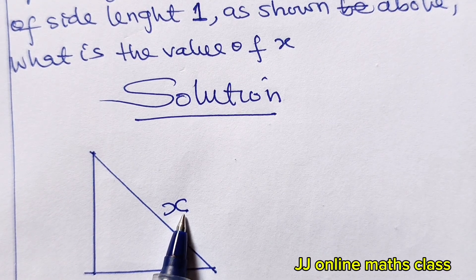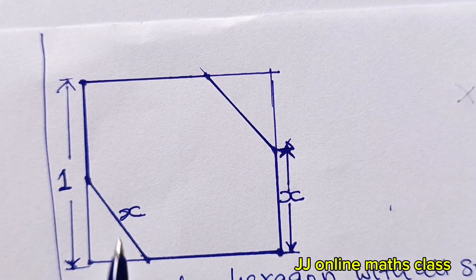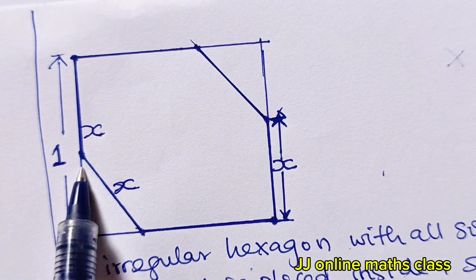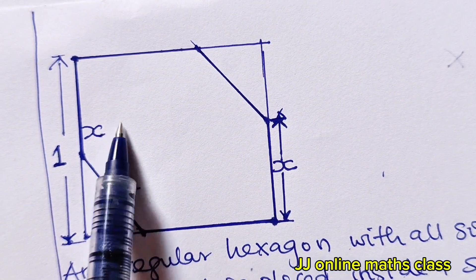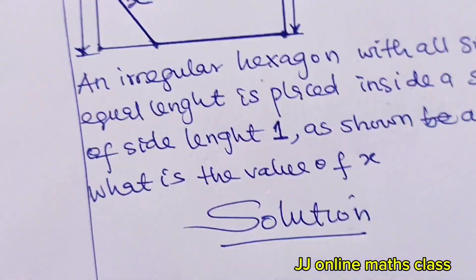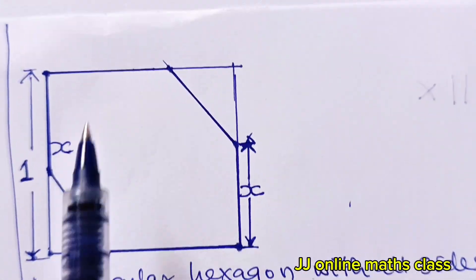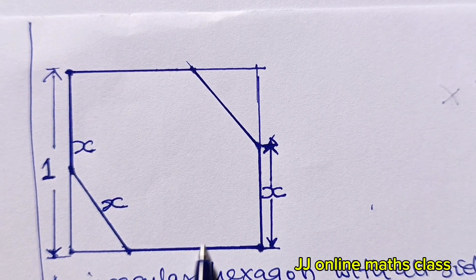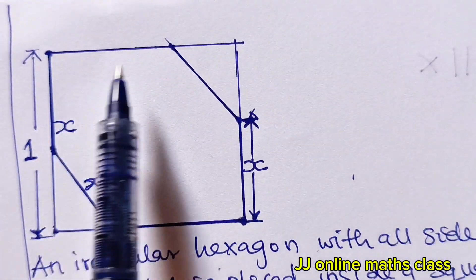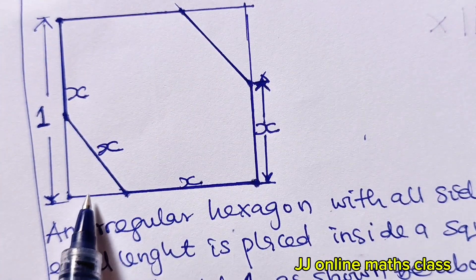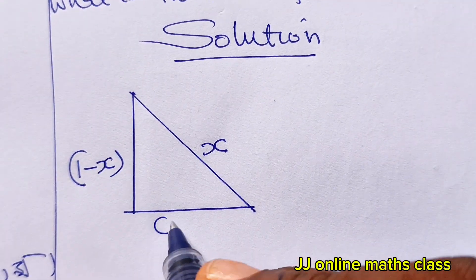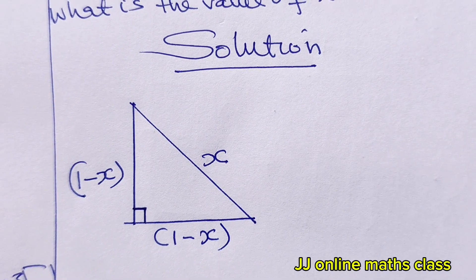Now, if the whole length is one and this side is x, then the remaining portion is one minus x. Similarly, the whole of this other side is one, and the hexagon side along it is also x, so that remaining portion is also one minus x. And notice that this is a right angle triangle.